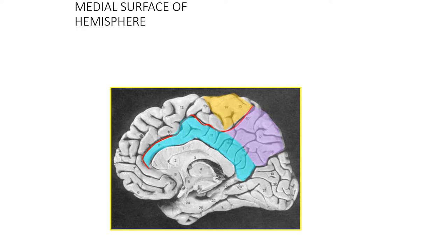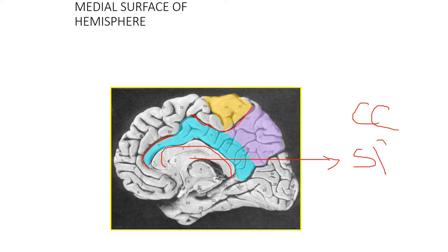Before we start with the sulci and gyri, you should see this arch-shaped band of commissural fibers, called the corpus callosum. Below the corpus callosum, you have the septum pellucidum, which is made of both grey matter and white matter. Below that is the diencephalon mass, made of the thalamus and hypothalamus.